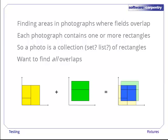For example, if the first photo contains the three fields shown in yellow and the second contains the two fields shown in green, our output should be the five rectangles shown in blue.